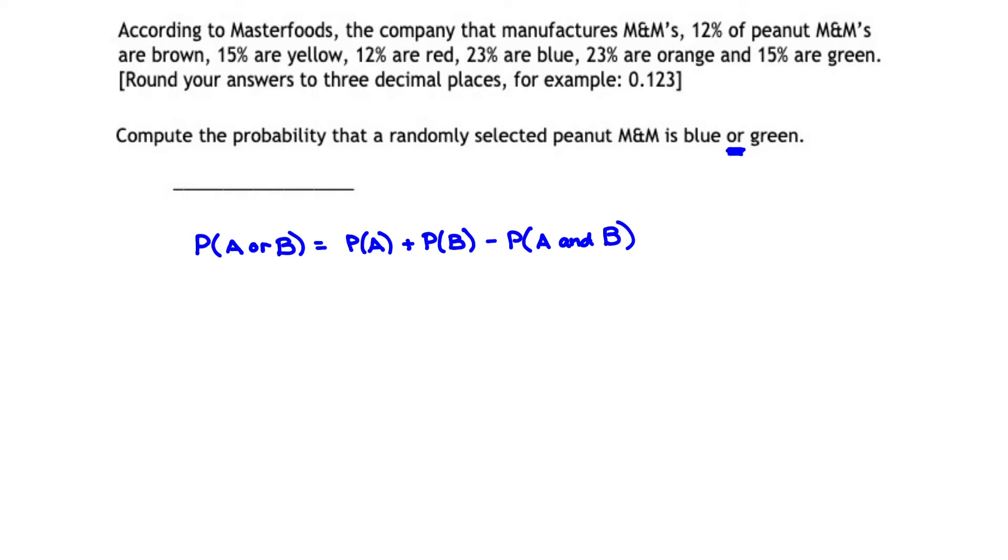That's what this is the basis of. So we're going to apply this rule to get the probability that a randomly selected peanut M&M is blue or green. Let's go through this.